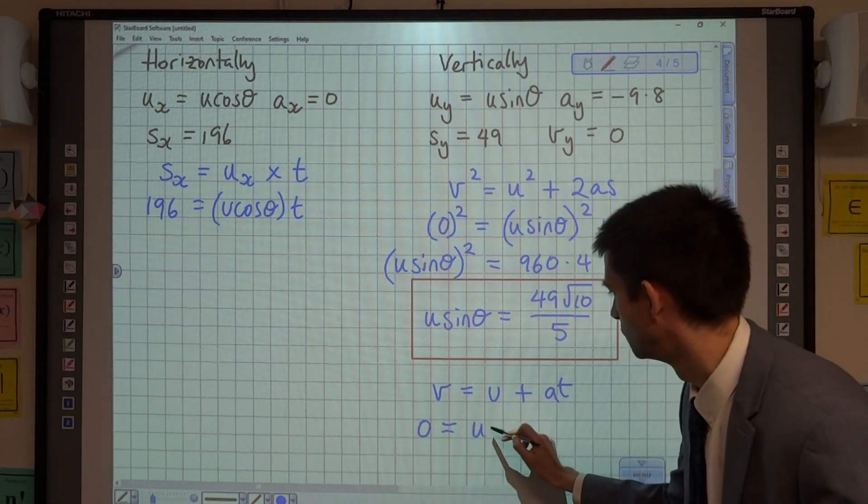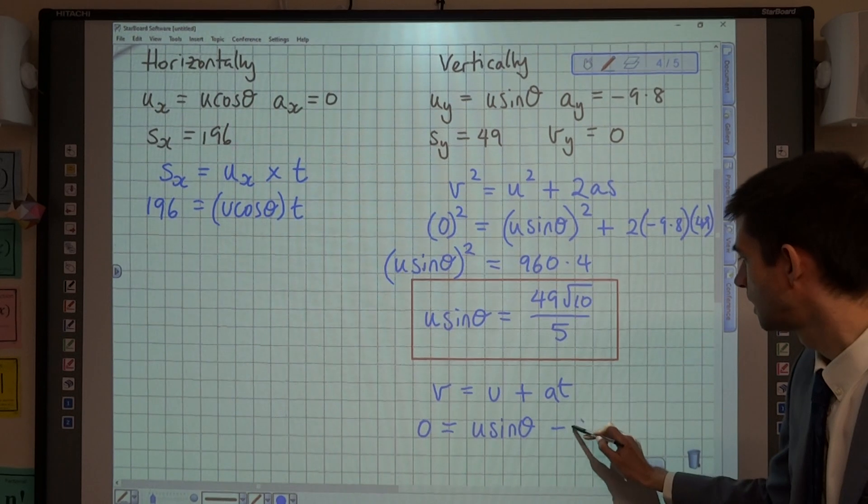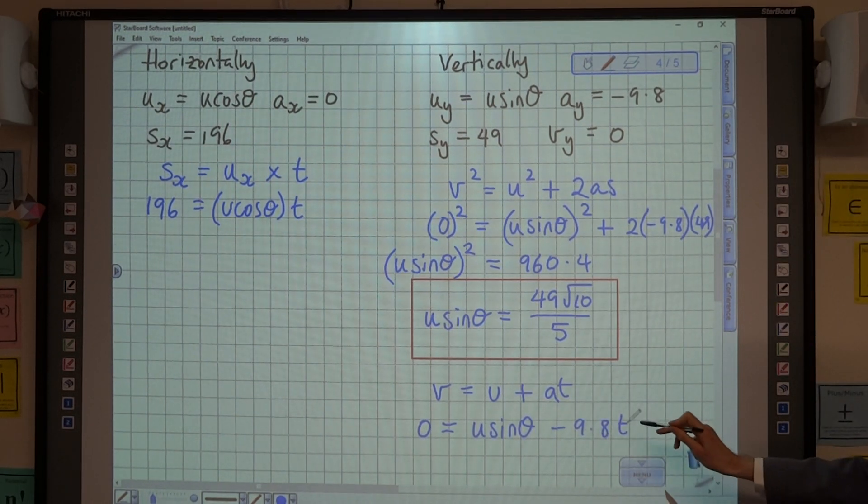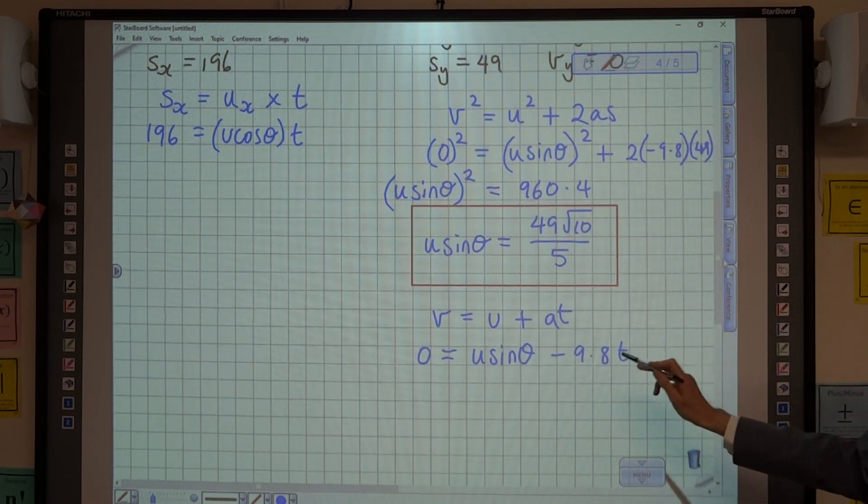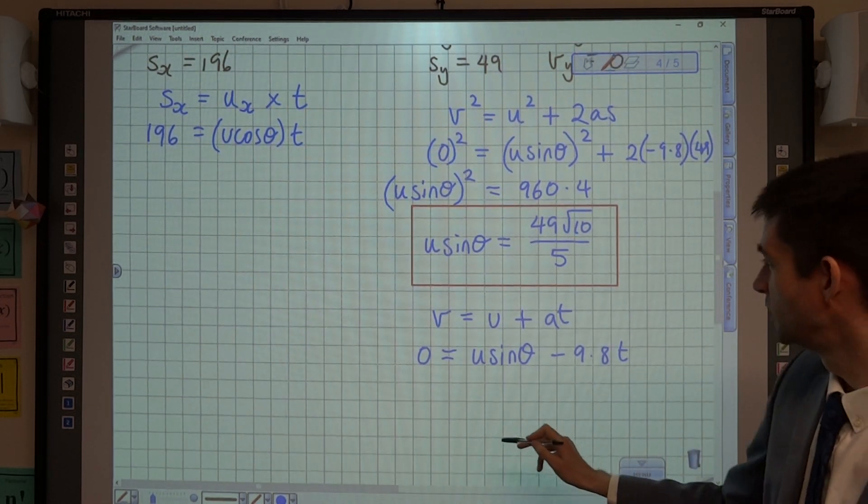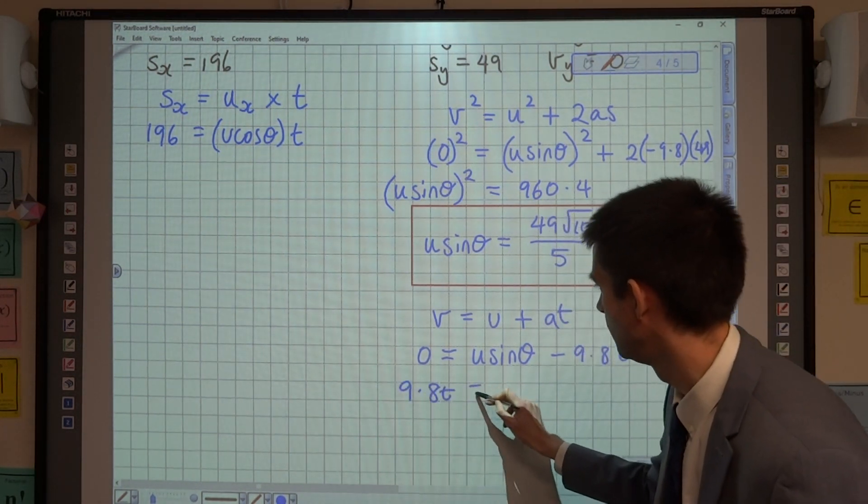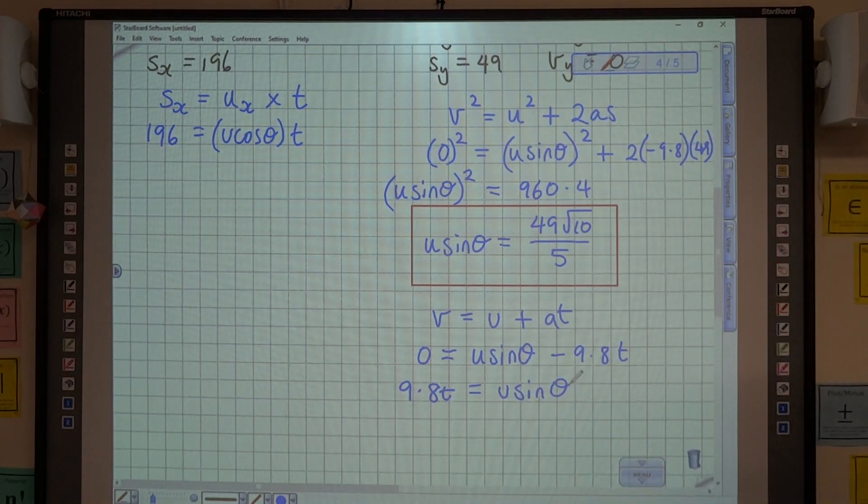We know the initial velocity vertically is u sin theta, and a is negative 9.8, and we don't know t at the moment. And what we can now do is, we can rearrange this to say that 9.8t equals u sin theta.